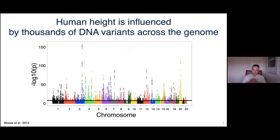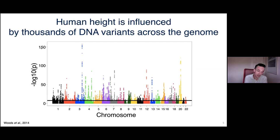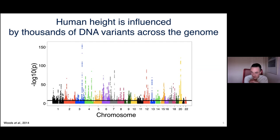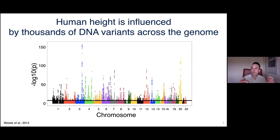We've done this for a large number of traits. Here is a relatively current result for the genetic architecture of human height. The human genome and different chromosomes are on the x-axis; statistical significance is on the y-axis. Every dot is a genetic variant, and anything above the black line is a significant association. The key takeaway is that there's a lot above the line — it's not just one or two loci that matter for height.